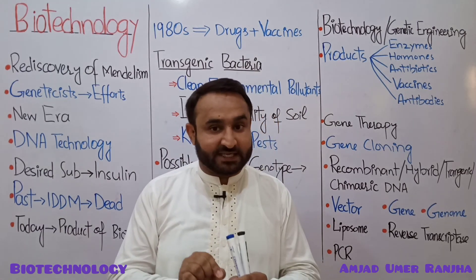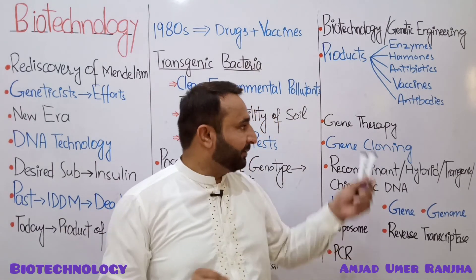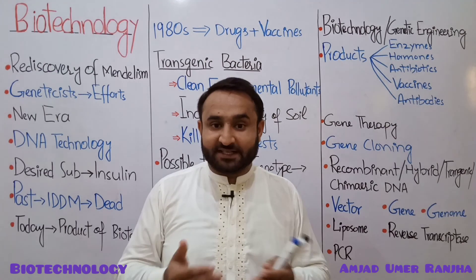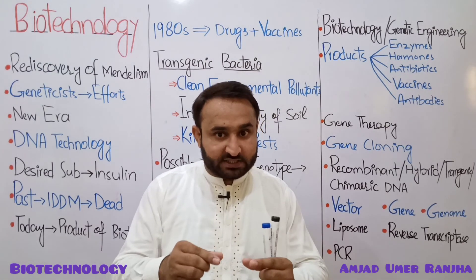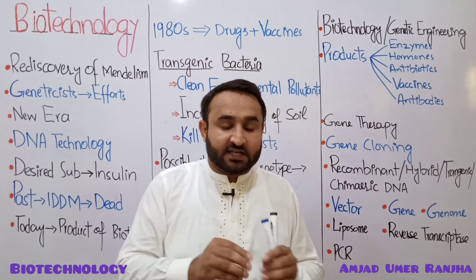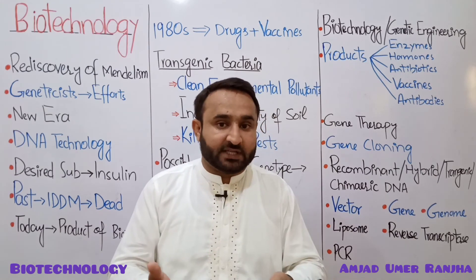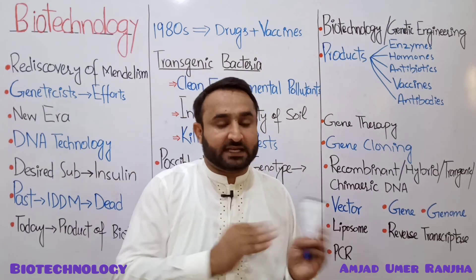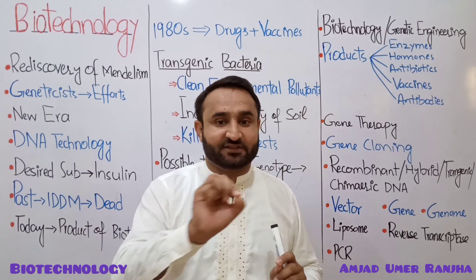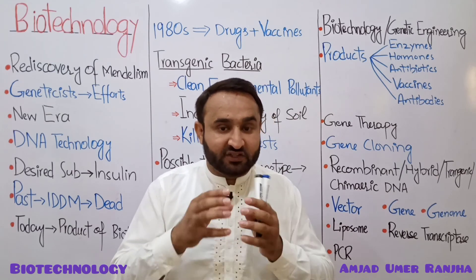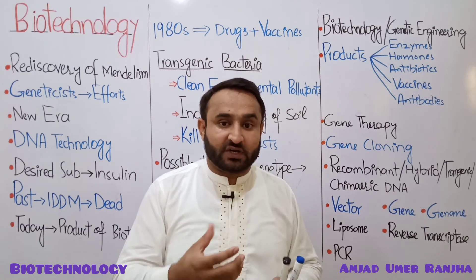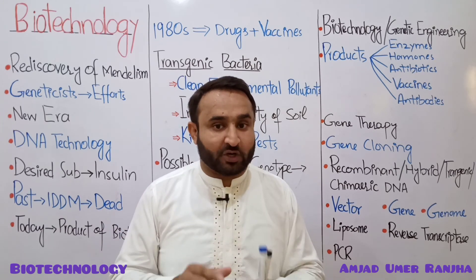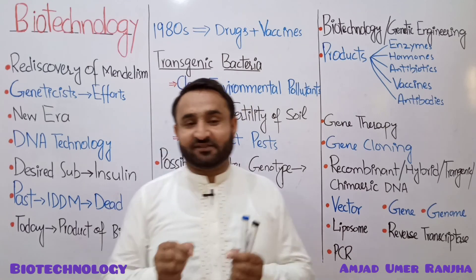PCR stands for polymerase chain reaction. Gene cloning has two methods: recombinant DNA technology and PCR. PCR is performed in a test tube or laboratory. When we need to produce a limited number of gene copies, we use PCR. When we need to produce copies continuously or indefinitely, we use recombinant DNA technology. In PCR, a gene is copied into millions of copies in a test tube or laboratory.